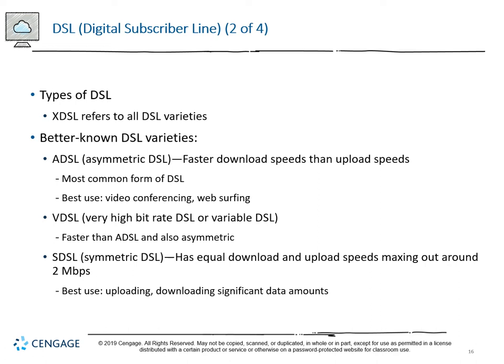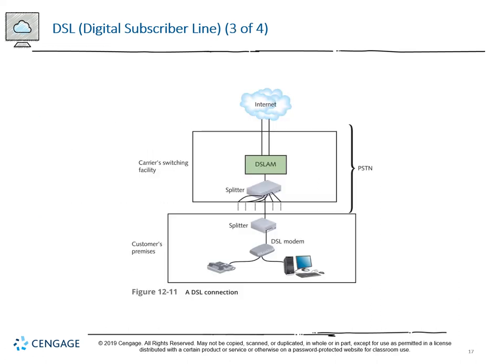XDSL refers to all DSL varieties. ADSL is probably the best known - faster download than upload, very similar to standard broadband. VDSL is variable or very high bit rate DSL, also asymmetric but faster. SDSL has equal upload and download, good for servers, but maxes out at about two megabits per second - it's a cost-benefit analysis. Here we see a DSL connection showing the customer premises, DSL modem, splitter that filters lines, the DSL access multiplexer, switching facility, and the internet at large - all a series of filters.